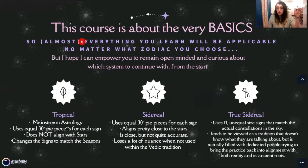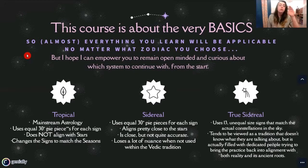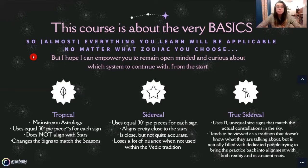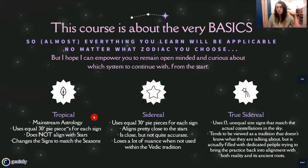So, a little recap. This course is about the very basics, and almost everything you learn is going to be applicable no matter what zodiac you choose. Some of the stuff that's less applicable is actually applicable to tropical too. No matter where you sit, this is the right place to learn the anatomy of a natal chart and figure out these basics. We've got tropical, which is mainstream astrology — it uses equal 30-degree pie pieces for each sign, does not align with the stars, and changes the signs to match the seasons instead.